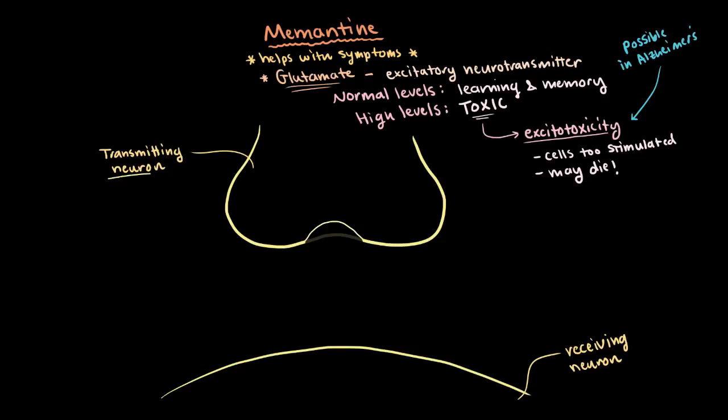So again, we've got our two neurons, transmitting and receiving. And we have this receptor on the receiving neuron called the NMDA receptor, which is also like this channel or gateway that lets in ions to the receiving cell. Now this gateway lets them in when glutamate binds to it.